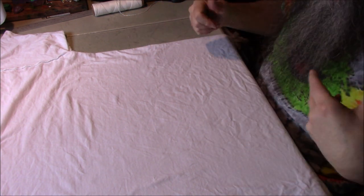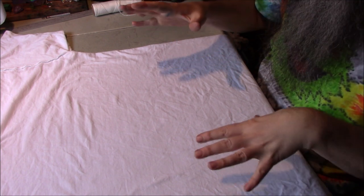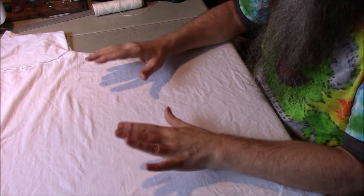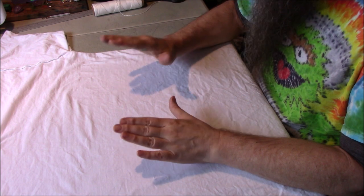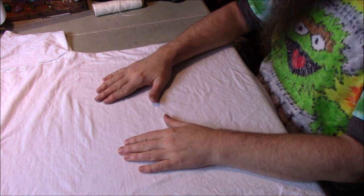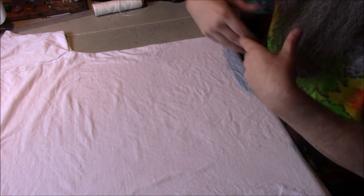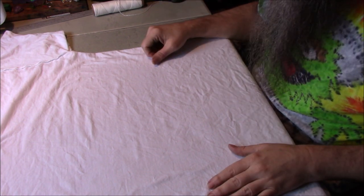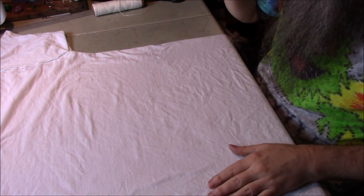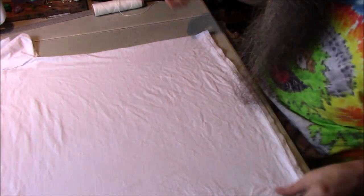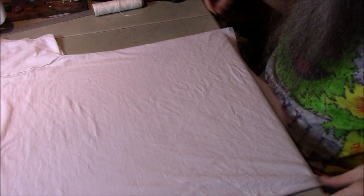So I'm going to tie these up. So far I've only done this as a scrunch, but I'm going to tie up a scrunch, a spiral, and an accordion fold and then do different colors on each one and see what kind of results we get. So you guys can just stay tuned here.